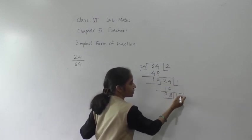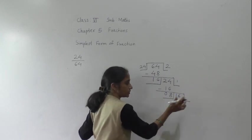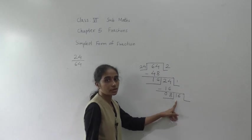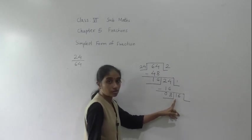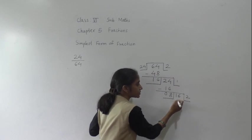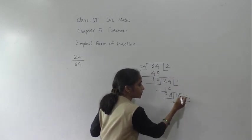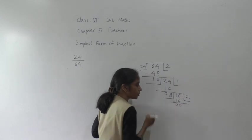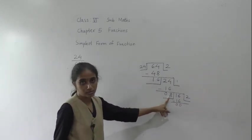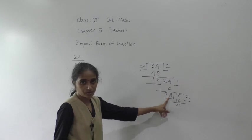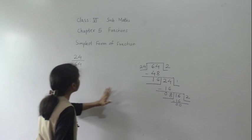Now 24 comes here as the next divisor. 16 ones are 16. 4 minus 6 is not possible, so take borrow — 14 minus 6 is 8, and 1 minus 1 is 0. So now 16 remains. Dividing: 8 twos are 16, 16 minus 16 is 0. So the last divisor, which is the HCF, is 8.